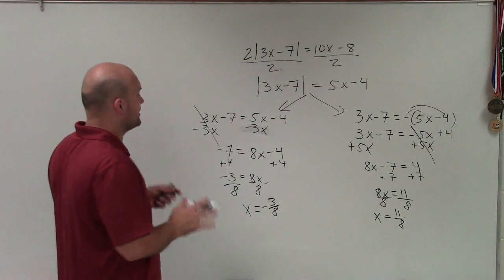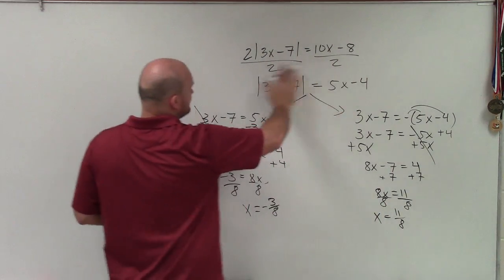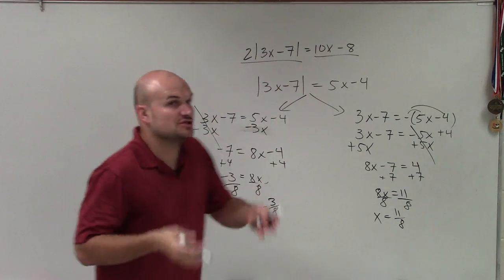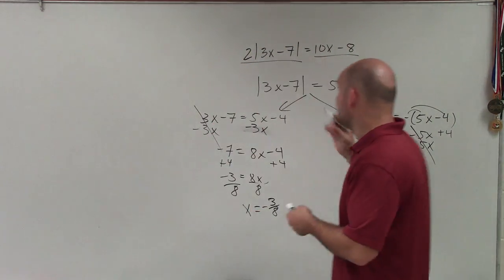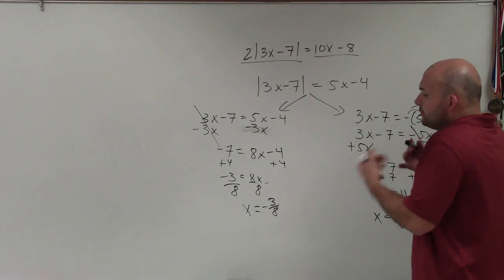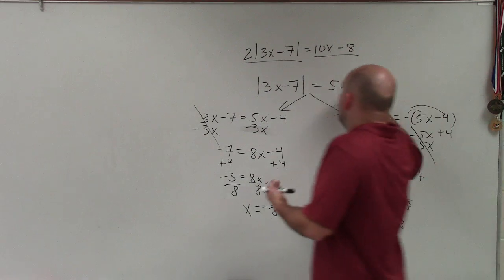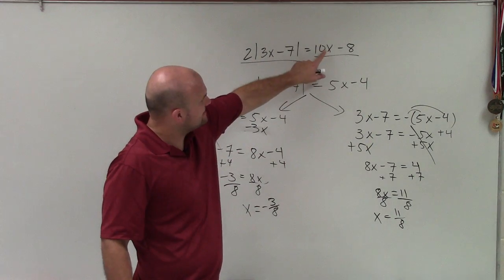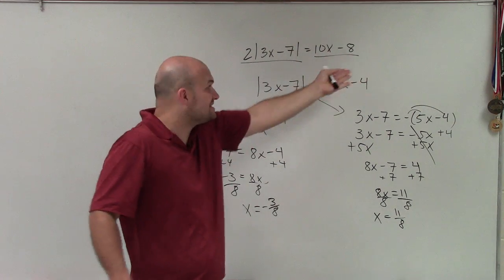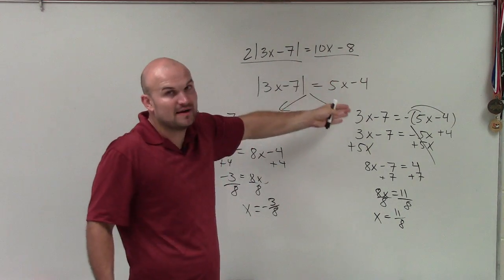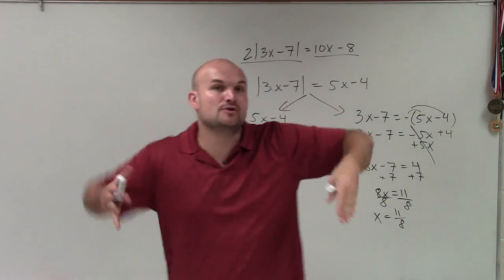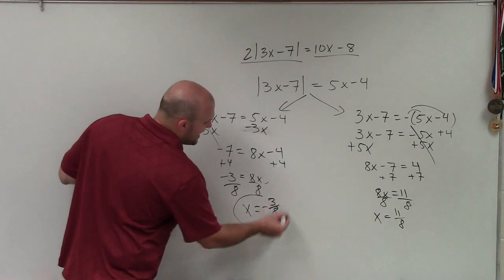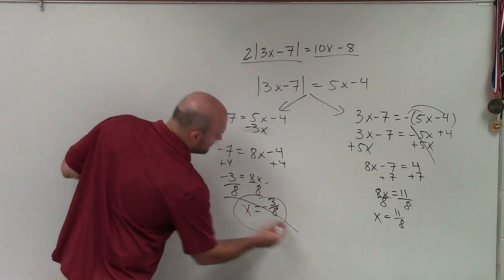Now I'm going to go back to my original equation and take my solutions and plug them in for x. One thing we notice is that when I take negative 3/8, multiply it by 10, and subtract 8, that's going to give me a negative number. An absolute value can never equal a negative number, so therefore this is not part of our solution.